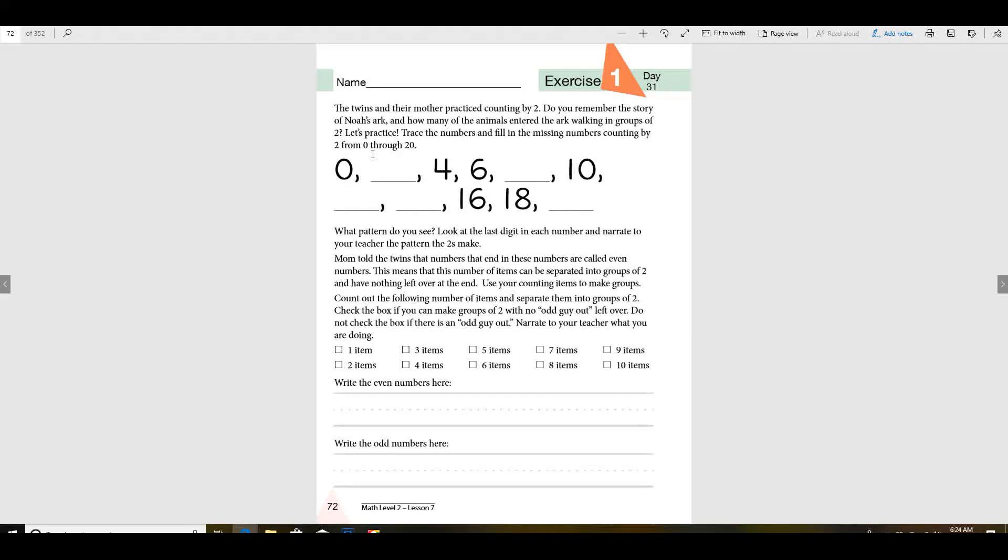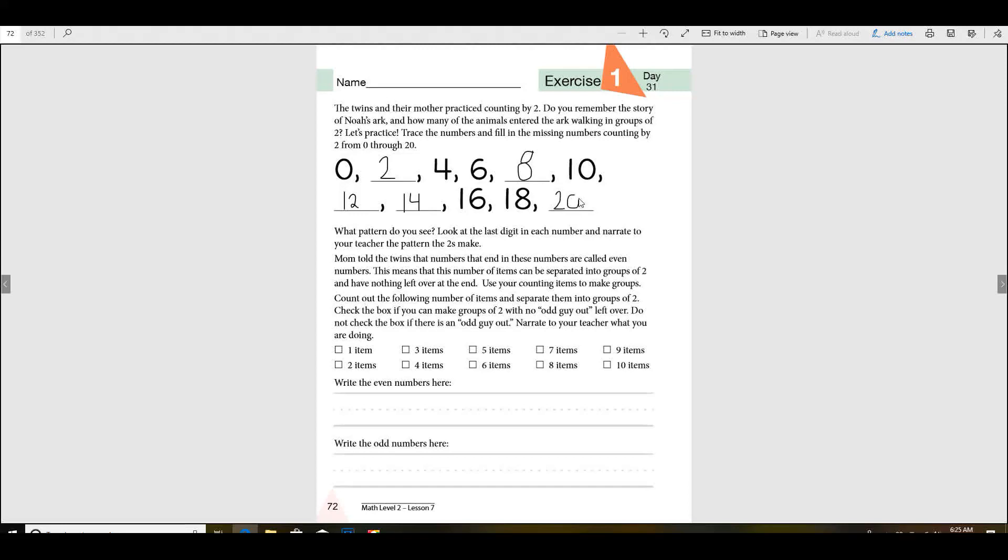Are you ready? Okay, so first is zero, and now when we're counting by twos, the next number then will be two, four, six, eight. Make sure you're filling them in. Ten, twelve, fourteen, sixteen, eighteen, twenty. Did you get those right? Did you say them before I did? Okay, well I hope you can skip count by twos now.